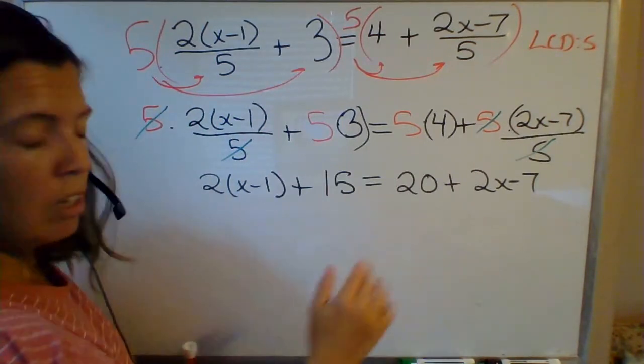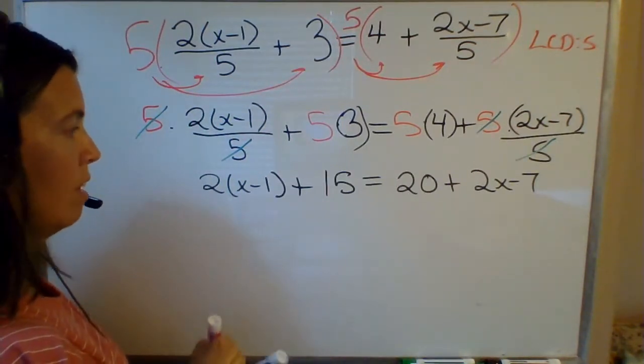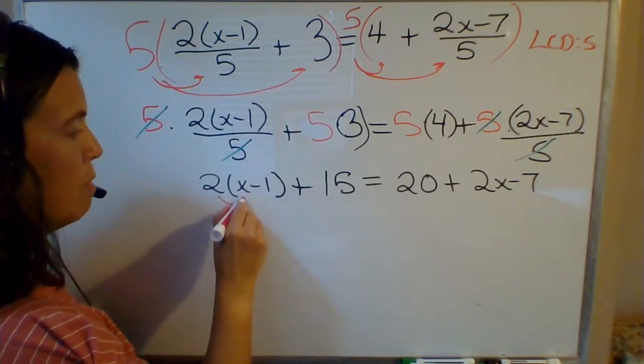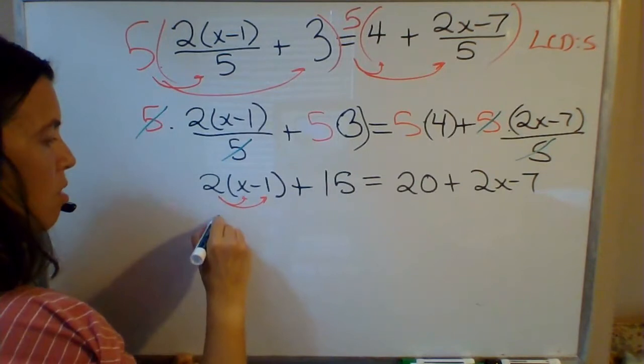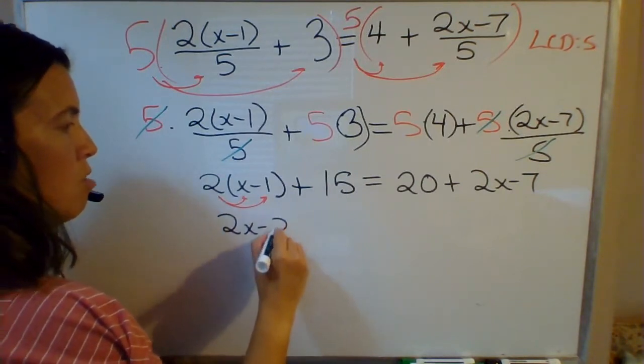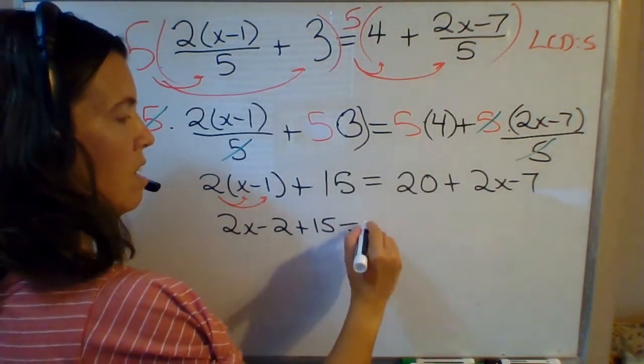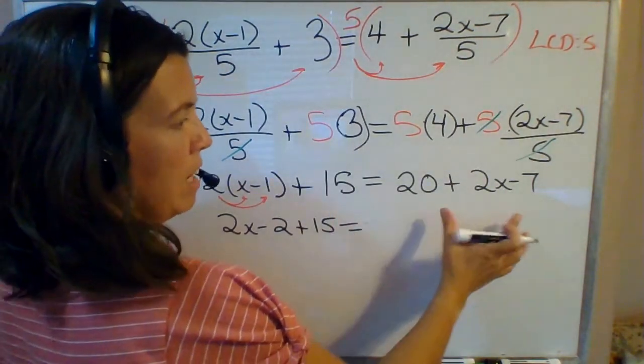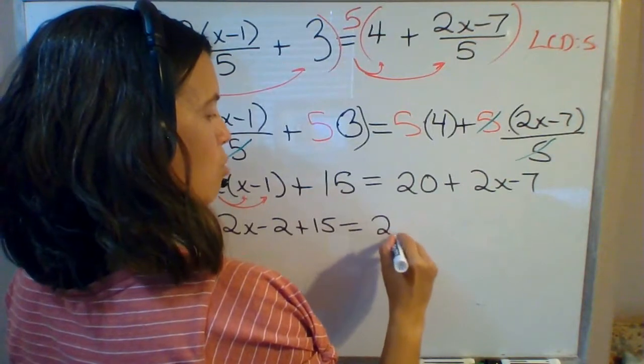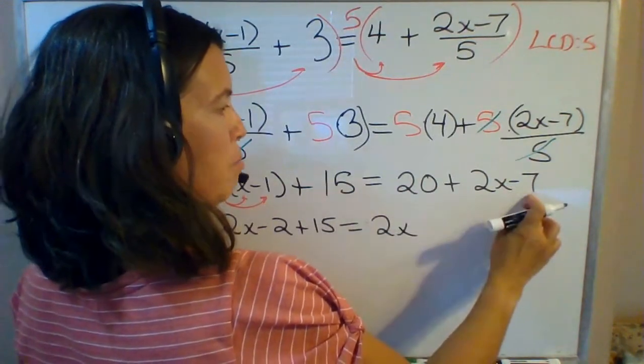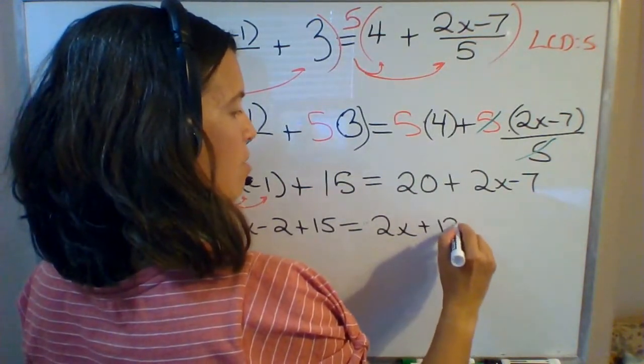Next thing I do is clean this equation up like I did in a previous example. I'm going to distribute the 2 here and then combine like terms. So this becomes 2x minus 2 plus 15 equals - I'm ready to combine like terms on the right side. So I have 2x and then 20 minus 7 is positive 13.